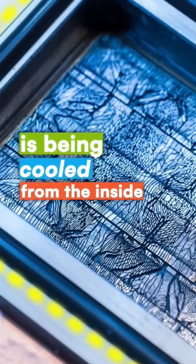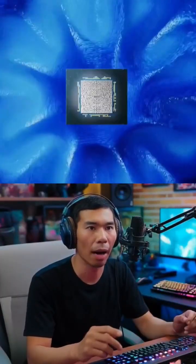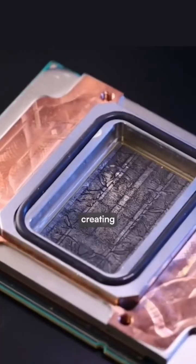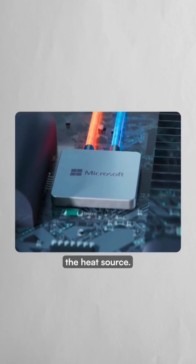This AI chip is being cooled from the inside. Microsoft just introduced a microfluidic system that etches tiny channels into the back of chips, creating pathways thinner than human hair for cooling liquid to flow directly to the heat source.